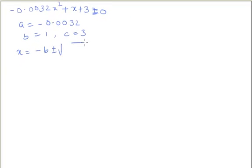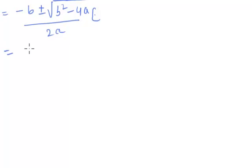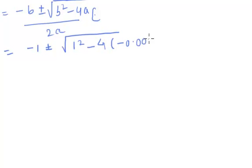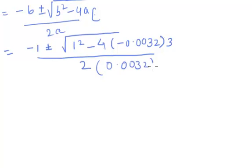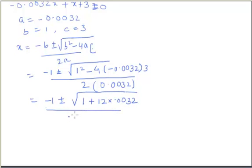Using the quadratic formula x equals minus b plus or minus the square root of b² minus 4ac, all over 2a, this gives minus 1 plus or minus the square root of 1 squared minus 4 times (minus 0.0032) times 3, over 2 times (minus 0.0032), which simplifies to minus 1 plus or minus the square root of 1 plus 12 times 0.0032, over minus 0.0064.